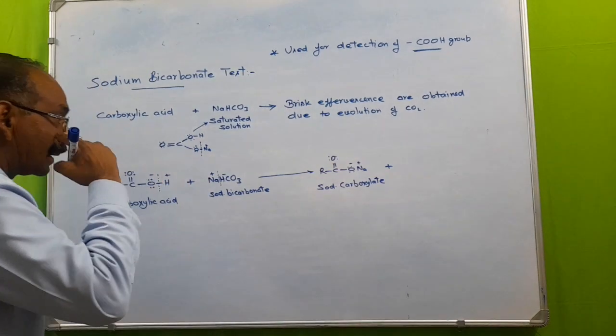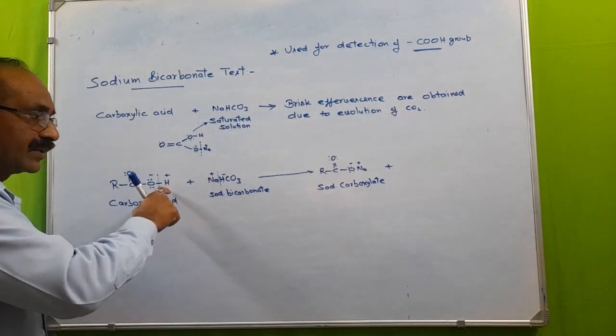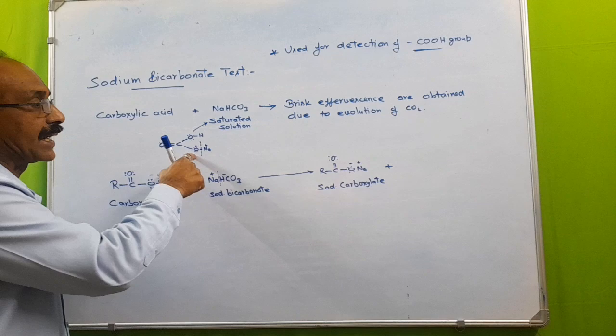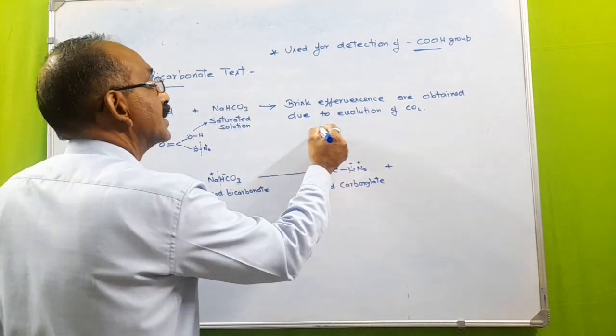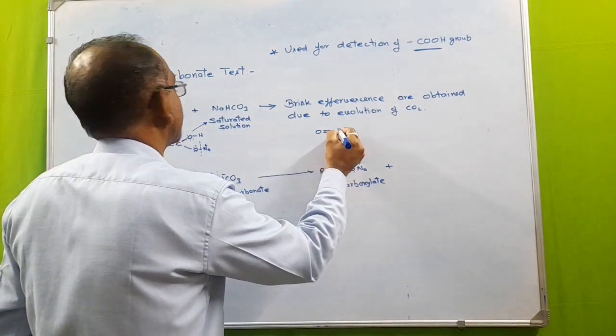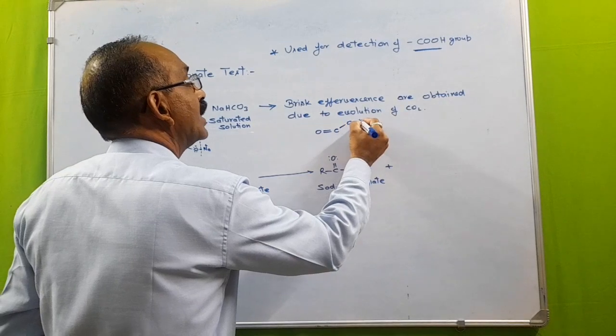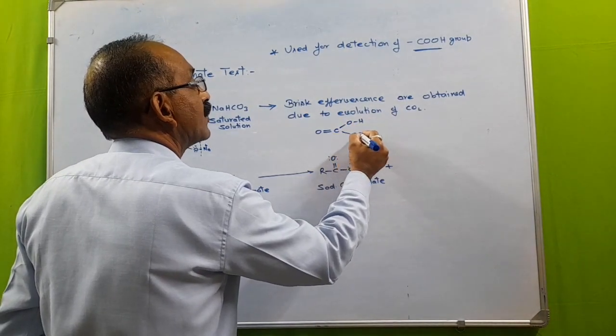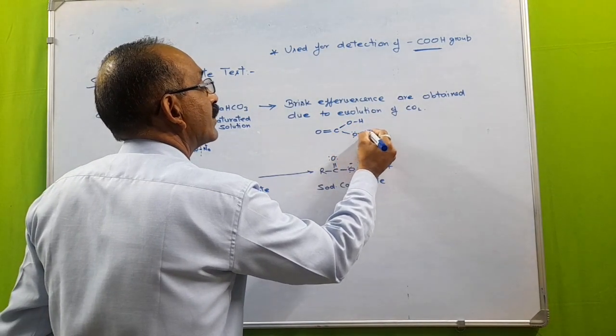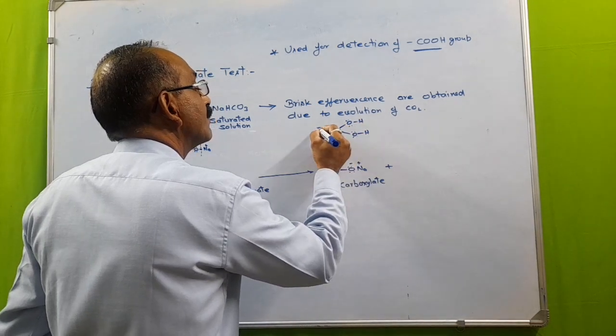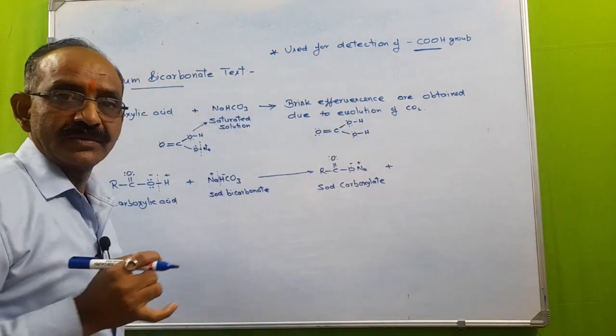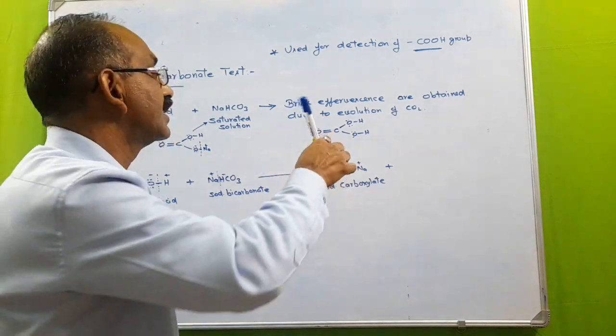Now here, the H+ furnished from here will form a bond with this negatively charged oxygen. We will get this type of structure. See here there is the OH and this electronegative oxygen now will form a bond with the hydrogen. This type of compound obtained is carbonic acid.